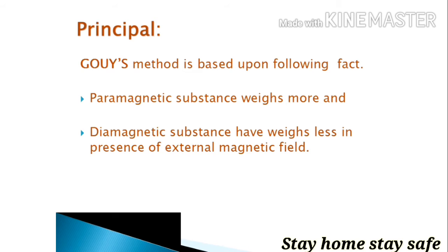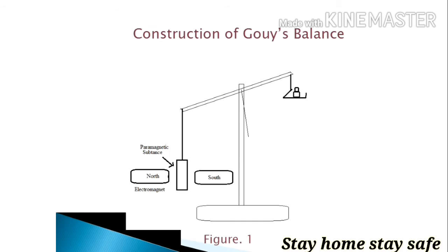That means if you measure weight of paramagnetic substance it will feel higher, and if you measure the weight of diamagnetic substance it will feel less in presence of external magnetic field. Now what is the construction of Gouy balance?